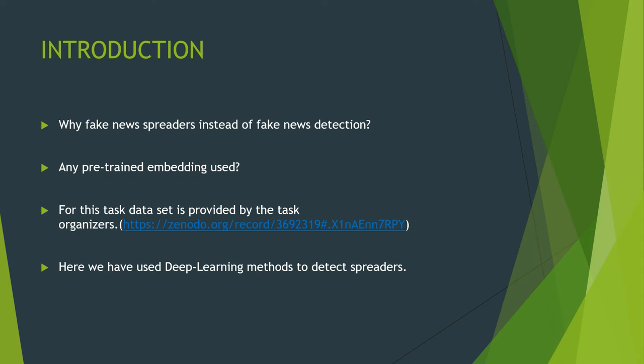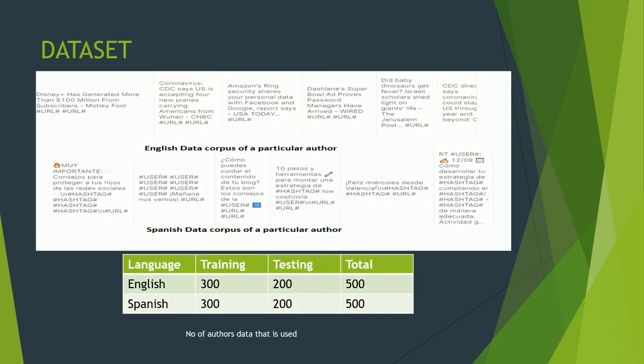There is no need for detecting those names separately. We are going to use pre-trained embeddings — specifically Google's Universal Sentence Encoder. For this task, the dataset is provided by the task organizer; you can find the dataset at the mentioned link. We are going to use deep learning methods to detect fake news spreaders, mainly using LSTM-based deep learning models.